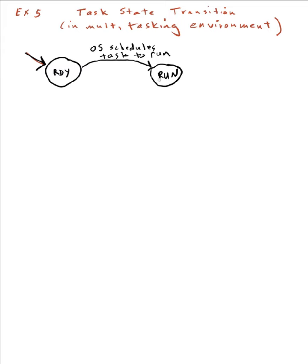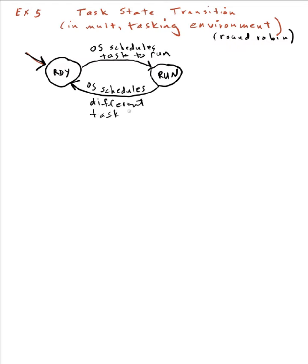A typical scheduling environment that does this is called round-robin — there are many others, but round-robin is probably the easiest to understand. When a task is in the run state and it completes its fair share of time, the operating system will move that task back into the ready state, and will schedule a different task to run. Again, what I'm labeling here is not input — it's a description of what has occurred to cause the transition of a state.